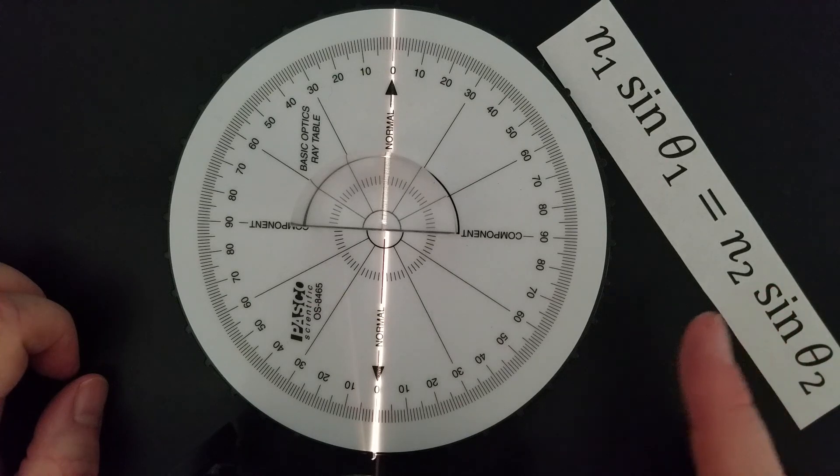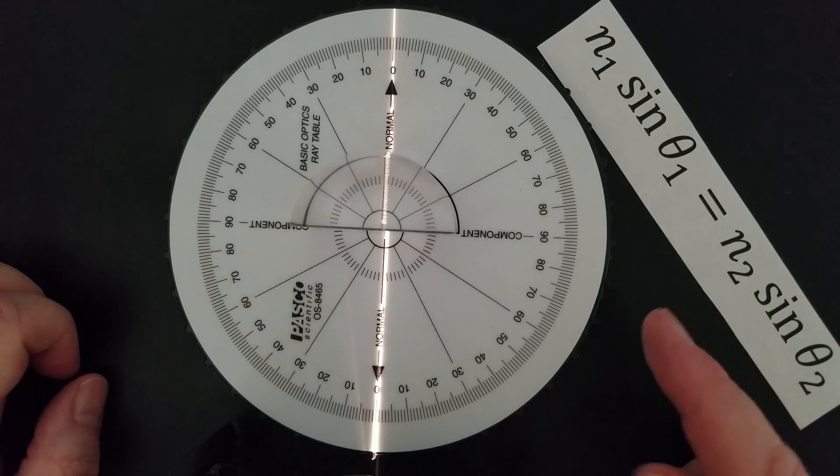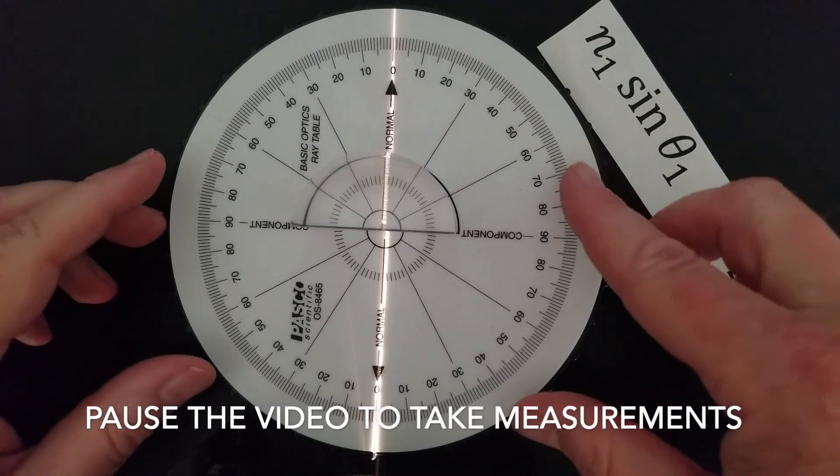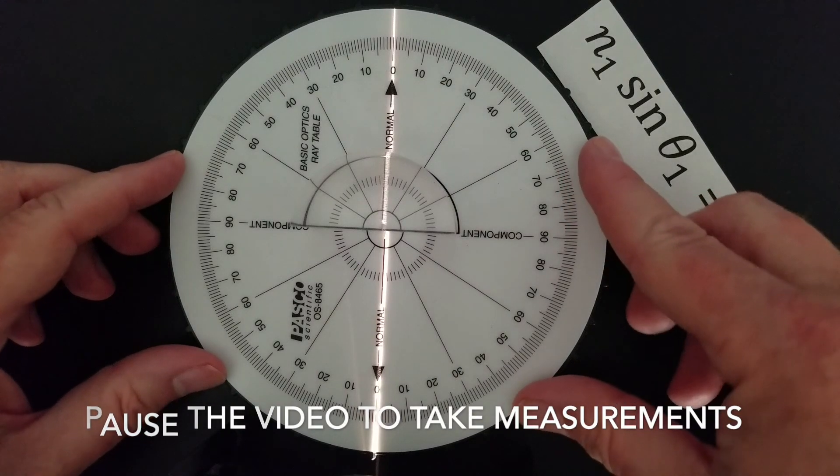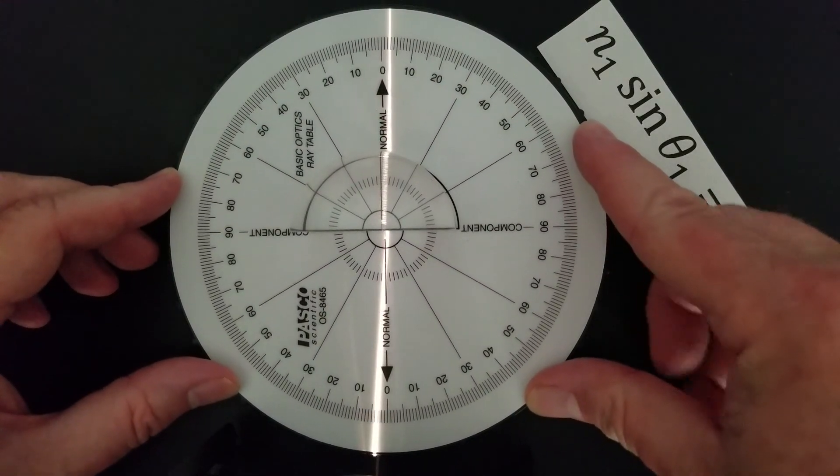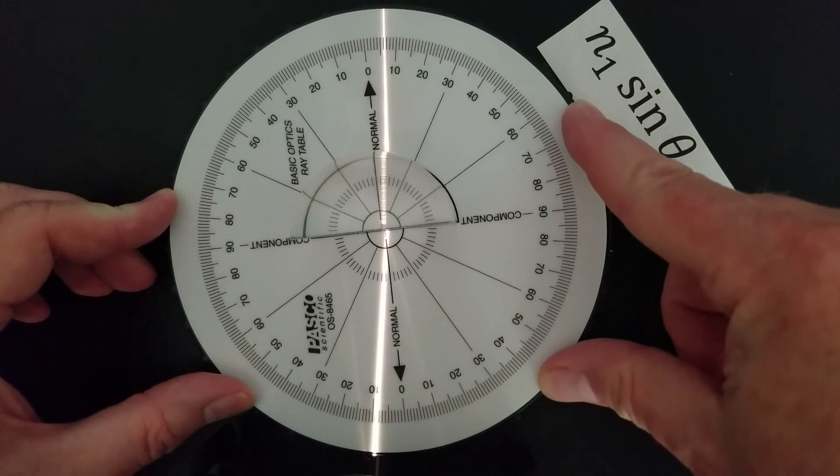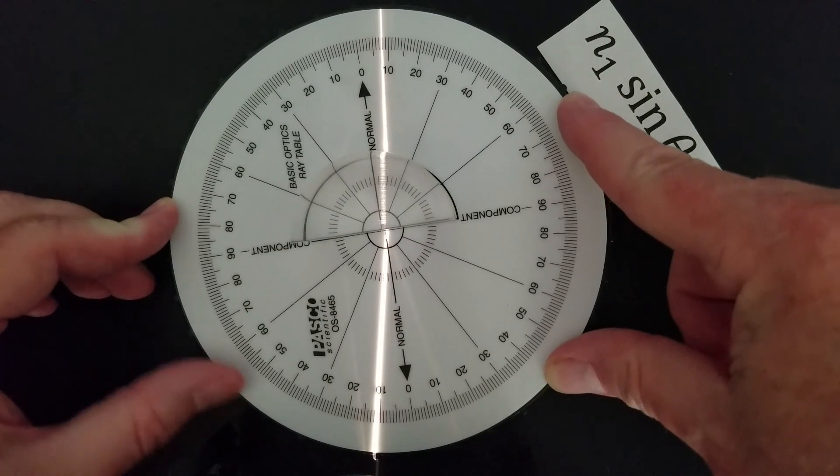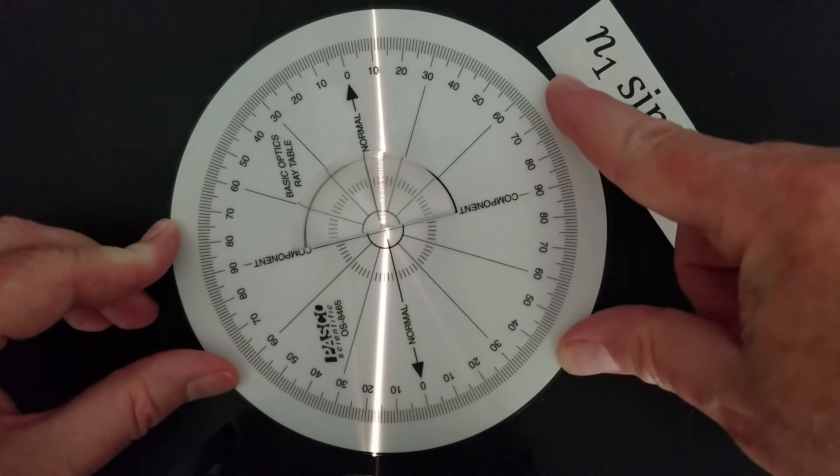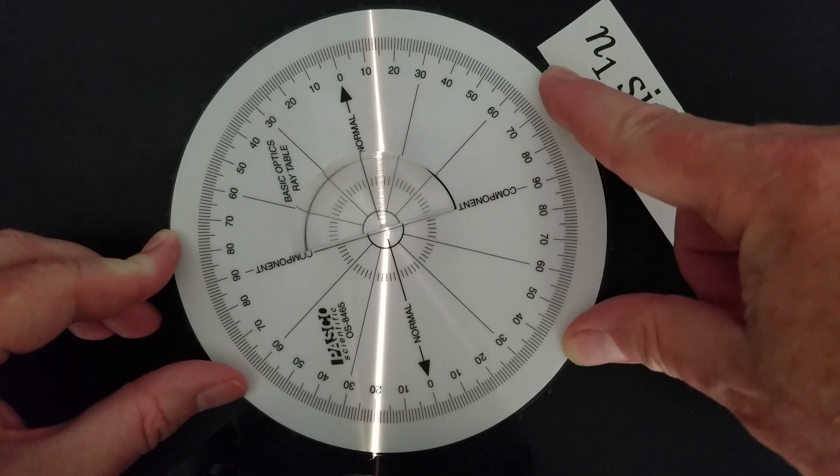Now indices do not have units. So we're looking for just a number. So I'm going to rotate this. And as I rotate this, you can take measurements on the angle of incidence and the angle of refraction.